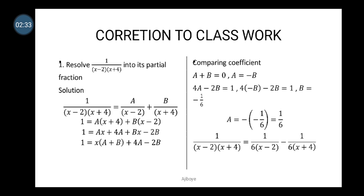We collect like terms, bringing all the x terms to one side and the constants to one side. Factorizing the x terms gives us 1 equals x(a plus b) plus 4a minus 2b.